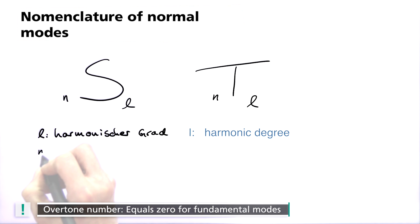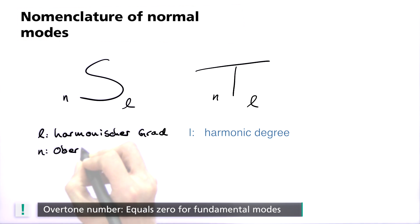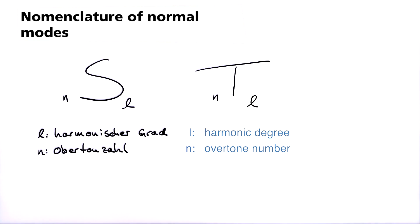Secondly, the index n, which indicates the overtone number and which equals zero for fundamental modes.